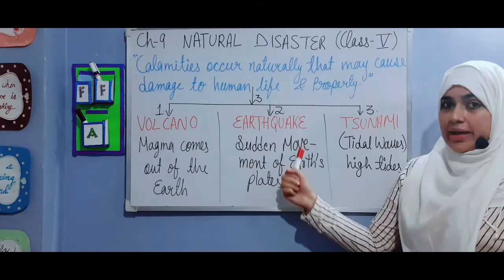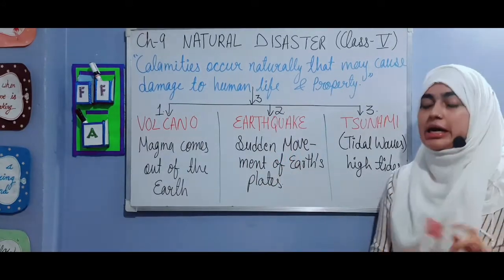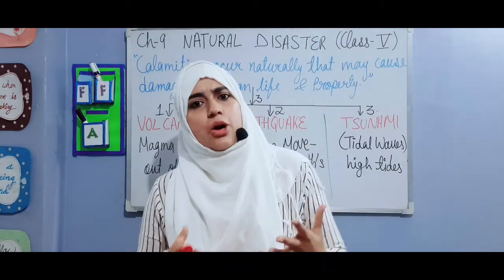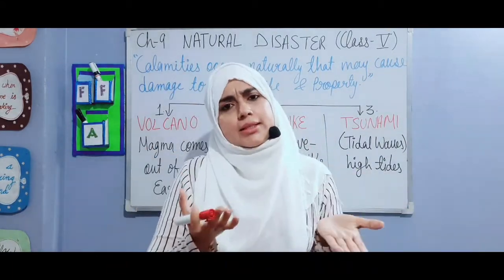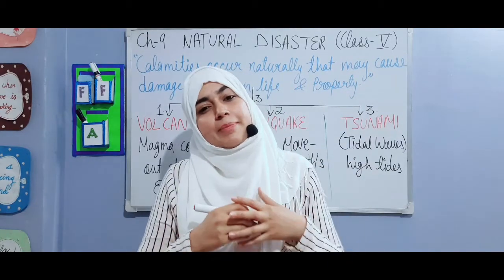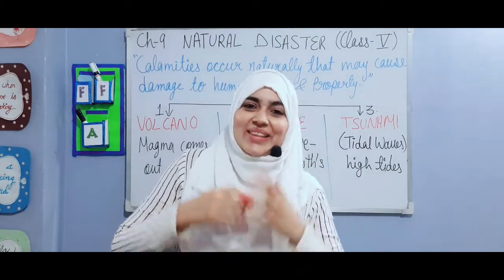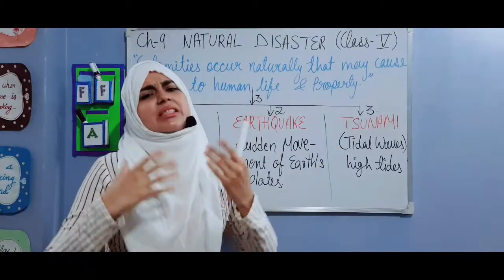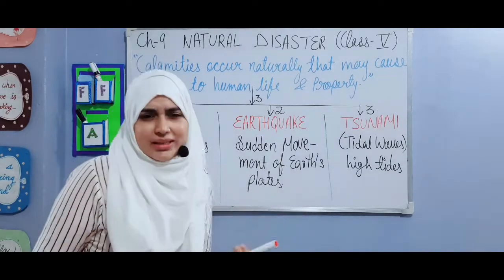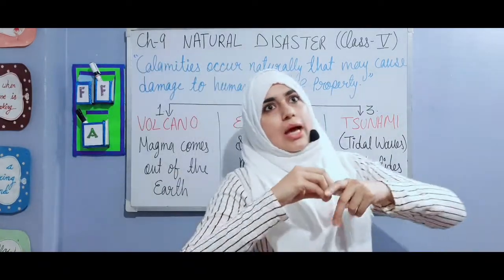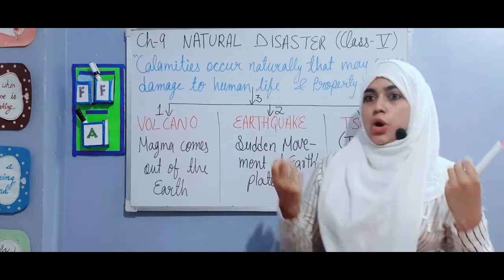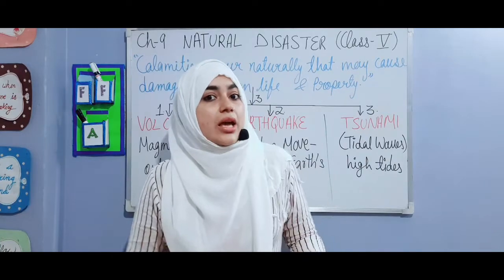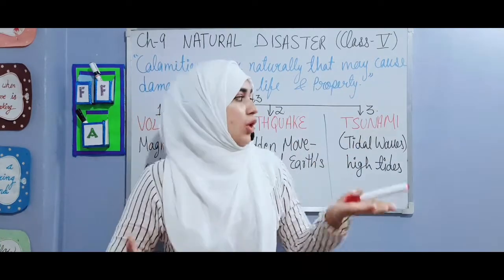Next is Earthquake — that is the sudden movement of Earth's plates. What happens in an earthquake? Which plates are moving, and why do they move? Next is Tsunami. Tsunami, we often call tidal waves. You know what tidal waves are — like when you go to the seashore or the ocean, you see high tides. When those tides get very high, it causes a tsunami.